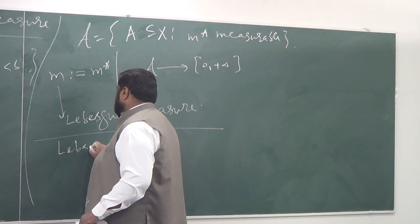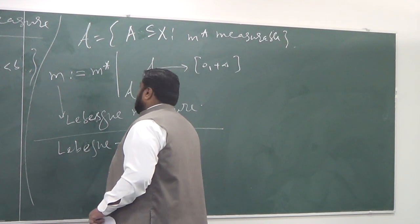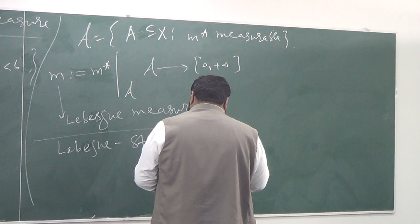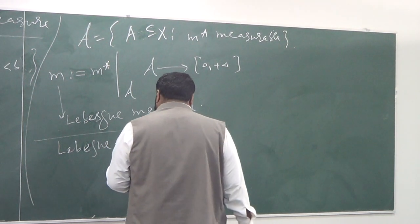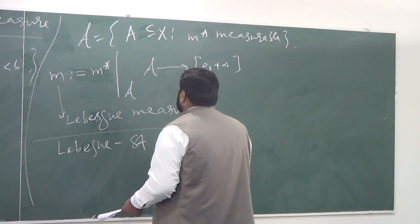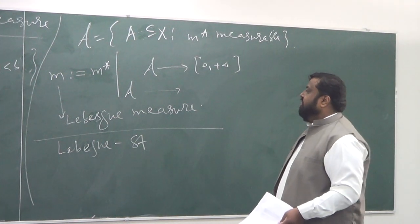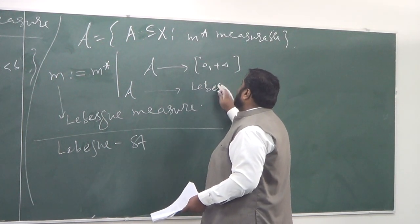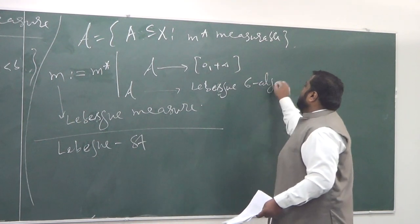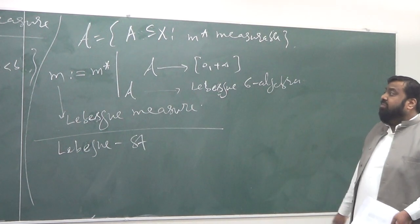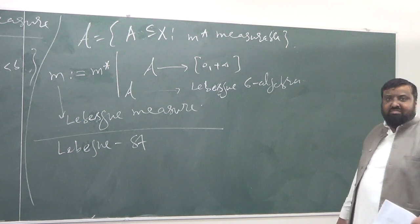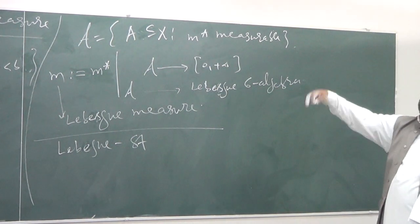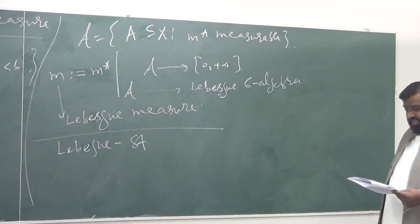Lebesgue measure comes through a very concrete application of outer measure. How about if I want to define Lebesgue-Stieltjes? By the way, there is a name for this A. It's called Lebesgue measurable. When I will say that a set is Lebesgue measurable, it's measurable in this sense. In other words, it's an element in A.